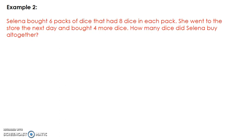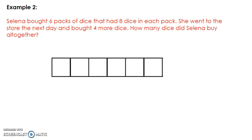To begin, I know she bought six packs of dice, so I will represent the six packs of dice with six equally sized boxes. Next I will put eight inside each box to represent the number of dice each pack has. But the next day Selena bought four more dice, so I will draw a smaller box next to the six equally sized boxes and inside the smaller box I will write four to represent the four more dice that she bought.